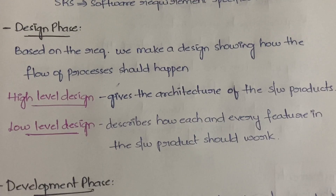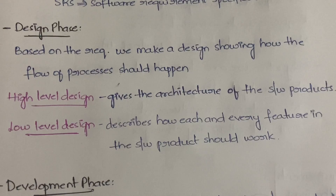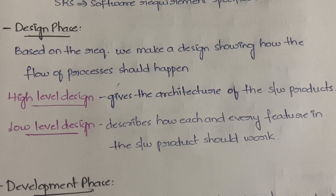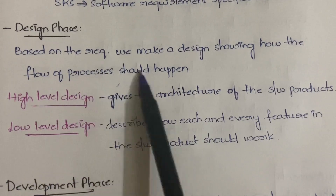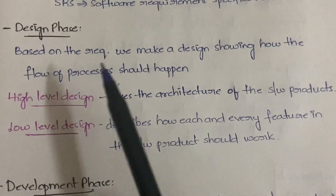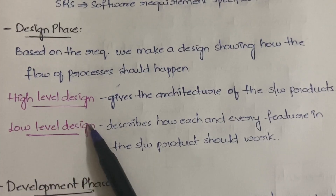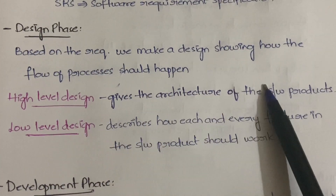Next is the design phase. Based on the requirements, a design is made showing how the flow of processes will happen. The person building the house will give a sequence of processes: first the basement, then the bore well, then the first-floor slab, then second floor, then walls, then ceiling, then steps. Similarly in software, based on requirements we create a design showing the flow of the entire process.